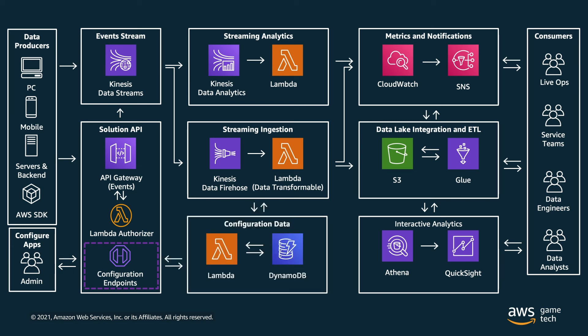Finally, we have the storage of configuration data for the solution, using DynamoDB, which stores the API keys as well as the application IDs for each of your games. We'll walk through API keys and application IDs as we begin exploring the solution in the AWS Management Console. And while the consumers are listed as live ops teams, service teams, data engineers, or data analysts — it can also just be you, especially if you're a team of one. In upcoming episodes, I'll show you exactly how to use this solution to consume data and how everything works.